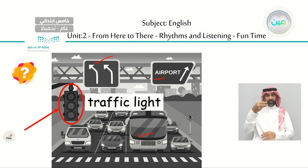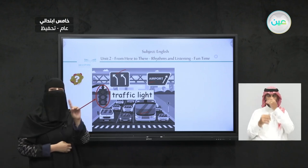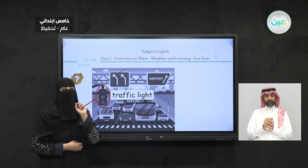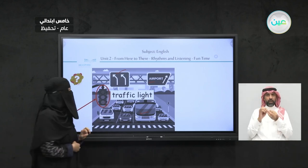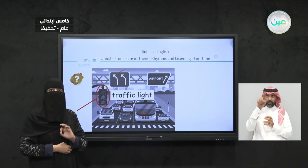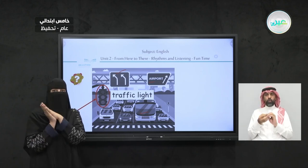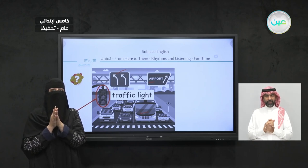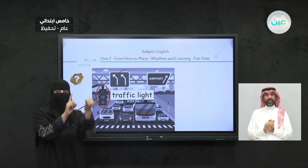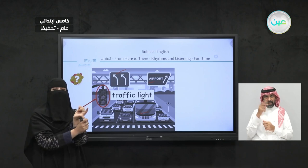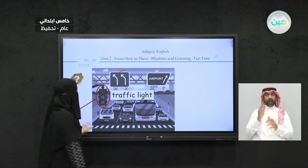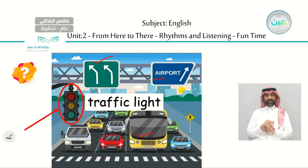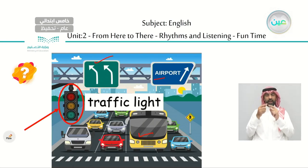So can you tell me what are the colors on the traffic light? It has three circles, three colors. Can you tell me what are these colors? Red. What else? Yellow. And green. That's good, excellent! Red, yellow, and green. So we call it a traffic light.